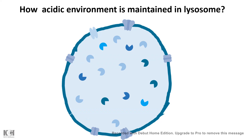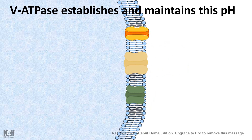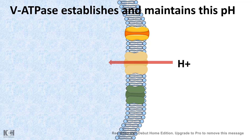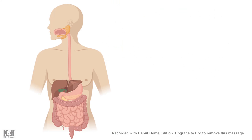Another uniport example: the lysosome maintains a very acidic environment. On the lysosomal membrane, one of the most important transporters is the V-type ATPase, which pumps hydrogen ions inside the lysosome, creating a low-pH acidic environment. This is also a uniport because hydrogen ion movement is from outside to inside. However, unlike GLUT1, this transport only occurs if ATP is hydrolyzed — making it an ATP-driven active transport.